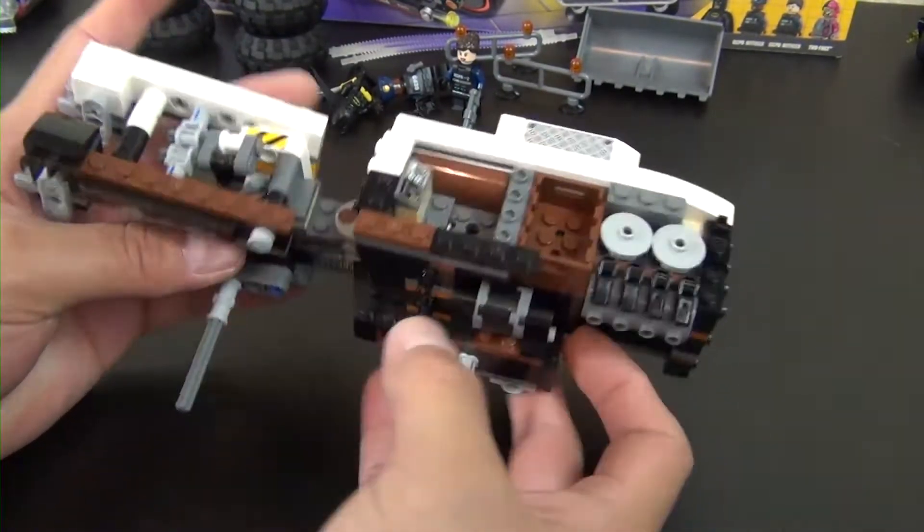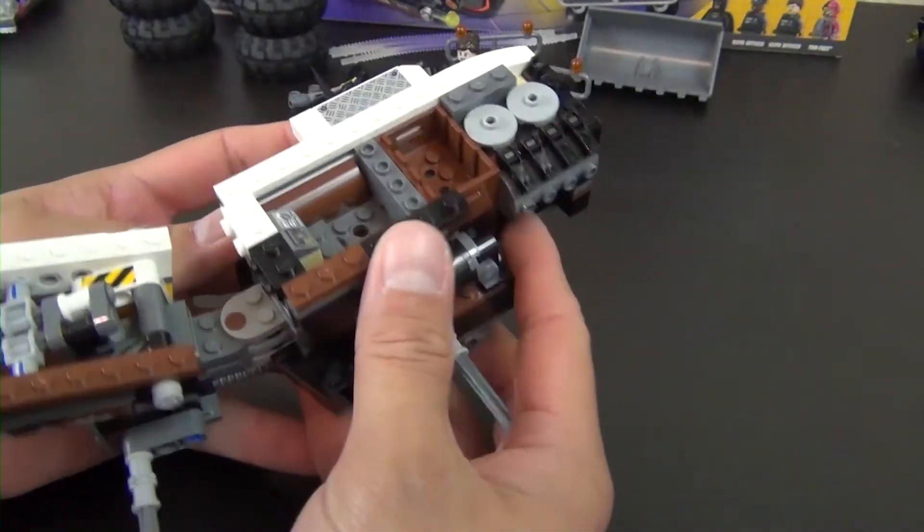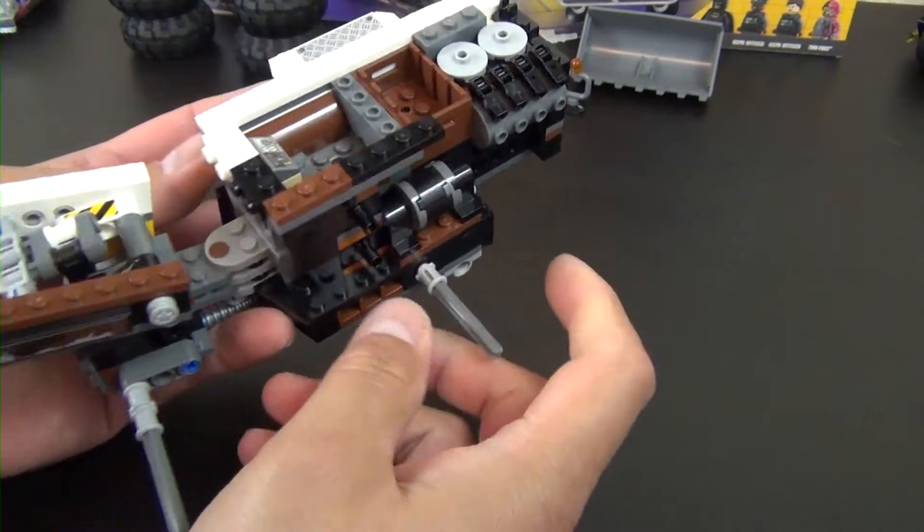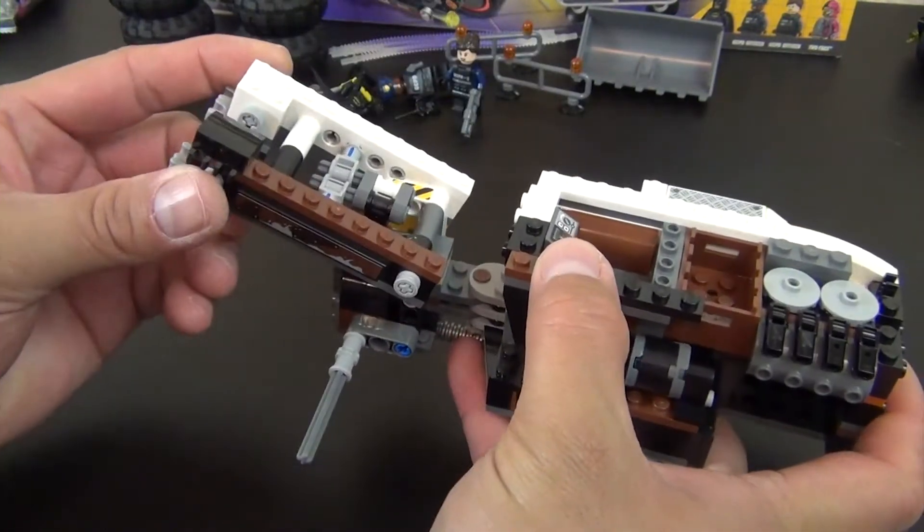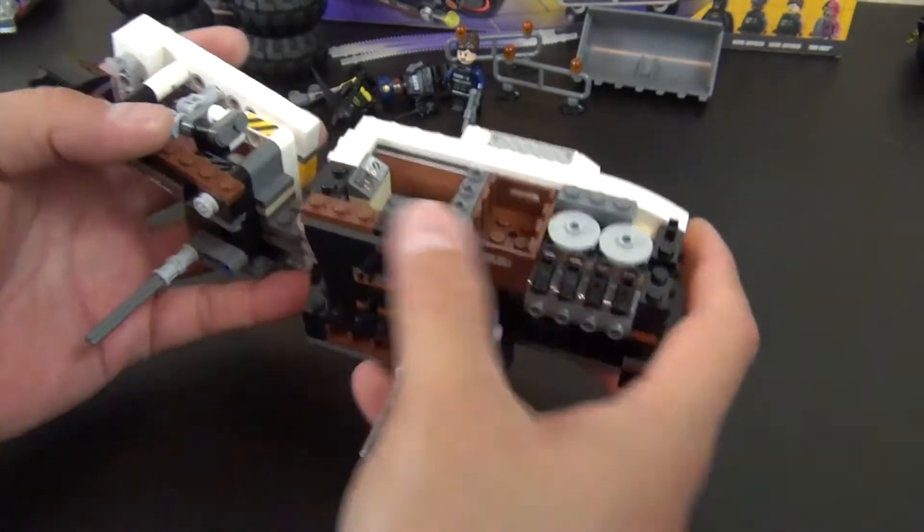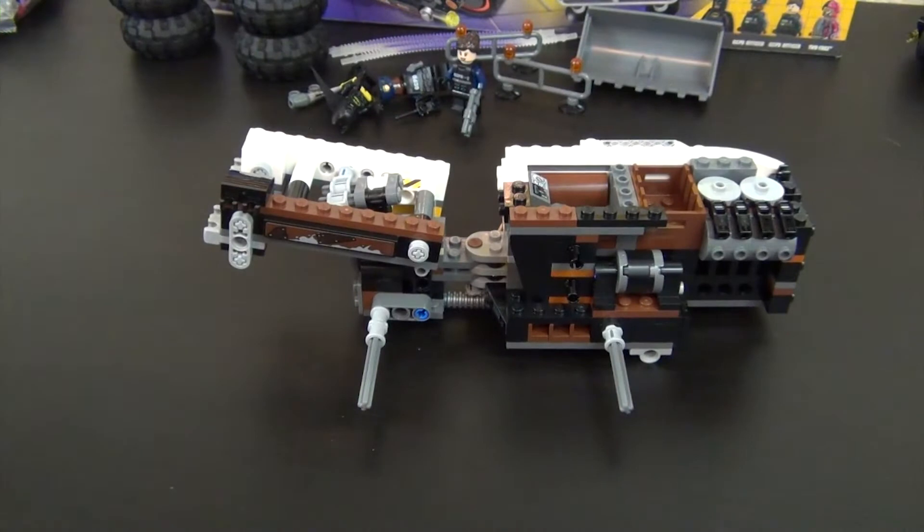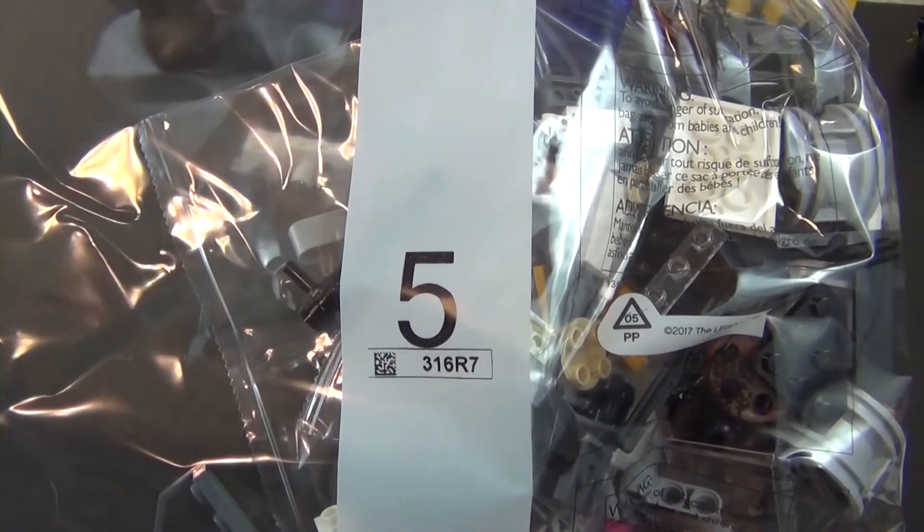Still doesn't quite look like - I mean it's starting to look like an excavator. We have our axles, we don't have the wheels on there yet. And you can tell this is where the bucket piece is going to go, and then we just have a pretty generic body. So we're going to finish this up with our fifth and final bag right now.